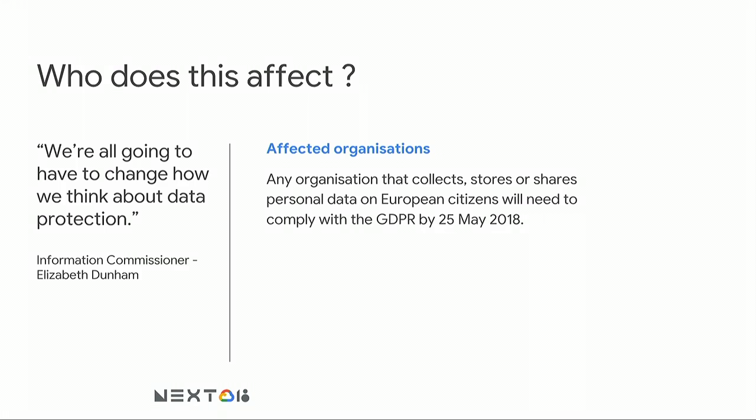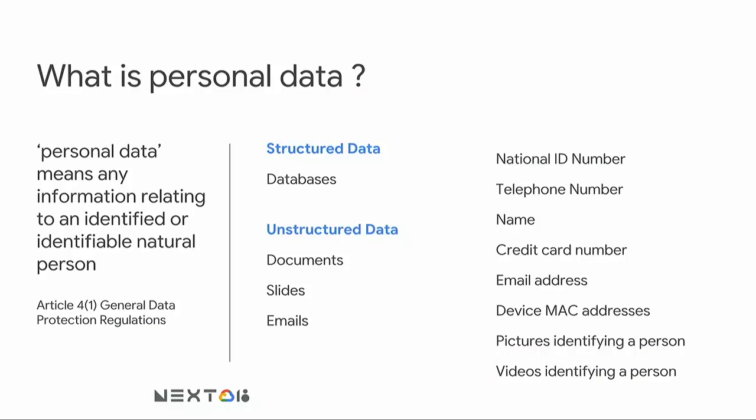Non-compliance comes with a very huge fine — up to almost 4% of annual revenue. Personal data includes things like your name, ID number, or in the US your social security number, your credit card number, your email address, and even your picture. It can sit in many forms: as structured data in a database, or as unstructured data in Google Docs, slides, spreadsheets, and even emails.